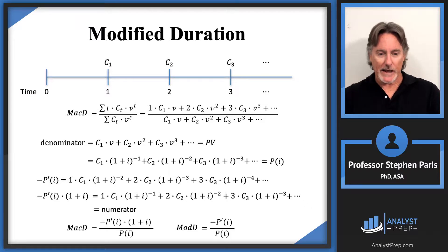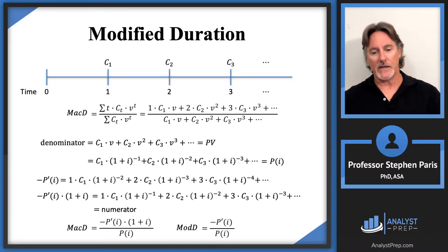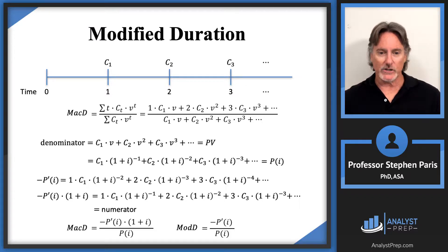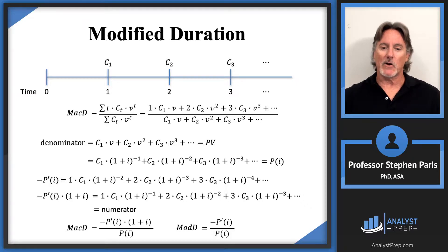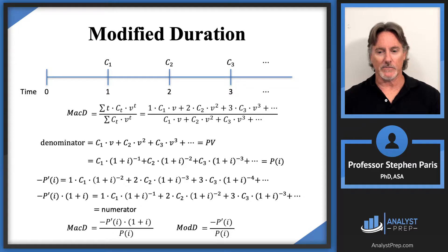We define the modified duration to be just the negative of the derivative of P divided by P itself — that's how modified duration is defined for a set of payments. The negative sign in front is needed because P'(i) is itself negative, so the negative makes the result a positive value.